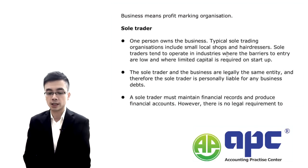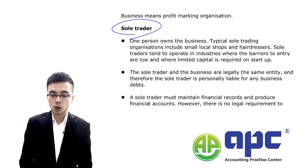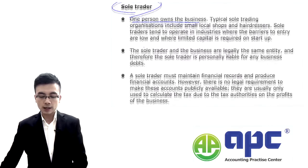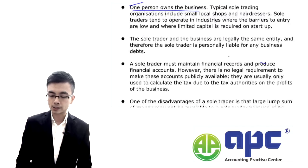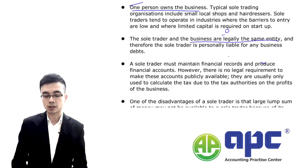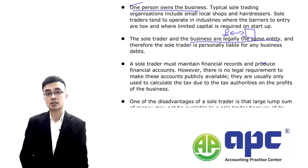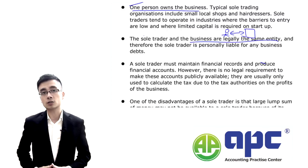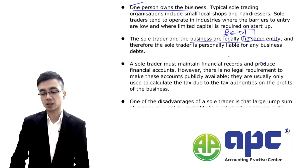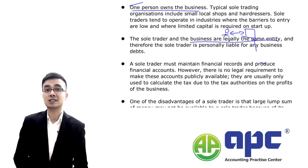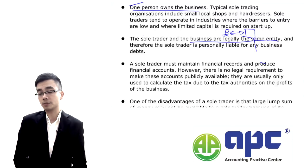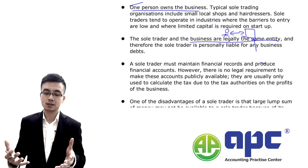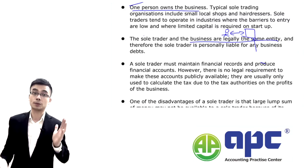Just to recap: there are different types of businesses. We've got the sole trader, where one person owns the business and is liable for any debts incurred. Legally, the sole trader and that person are the same entity — we can't separate them. But from the accounting point of view, we'll be introducing a concept called business entity, because we record transactions related to that entity — which is the sole trader business — rather than the person themselves.